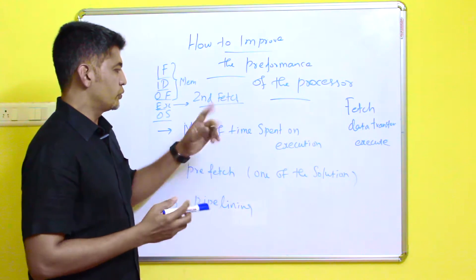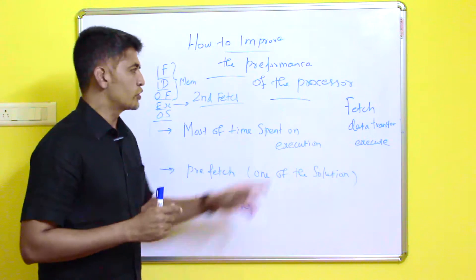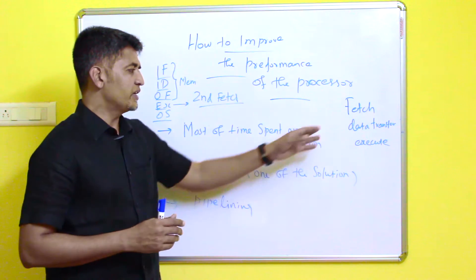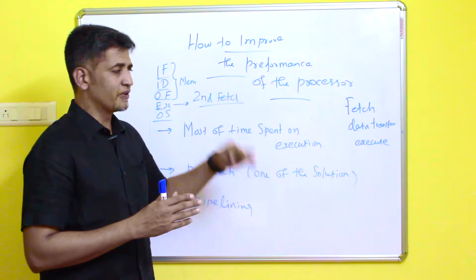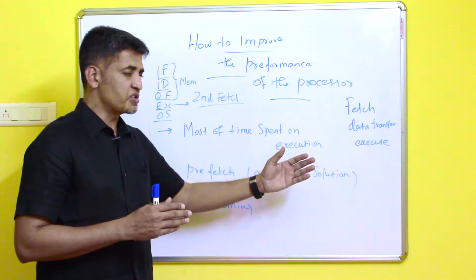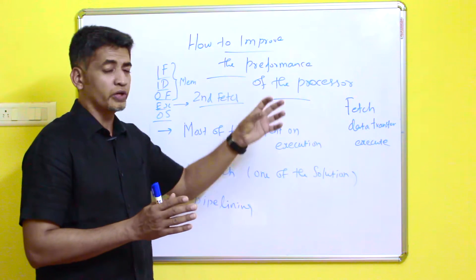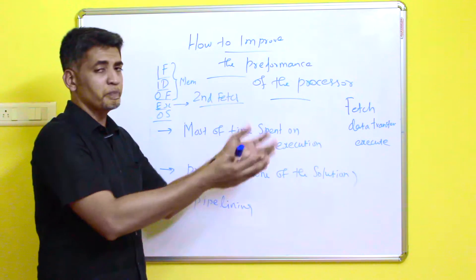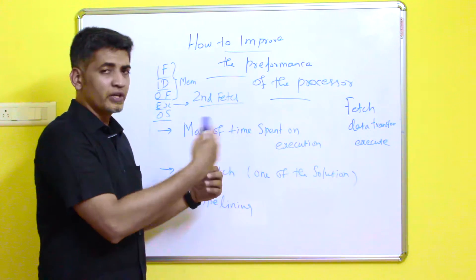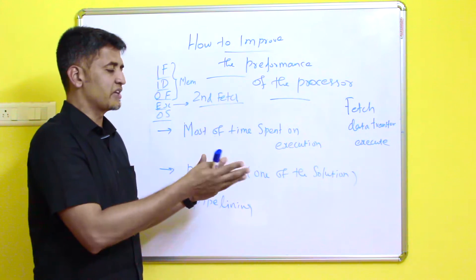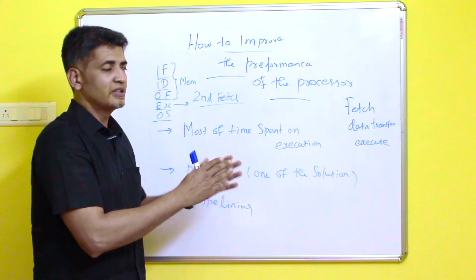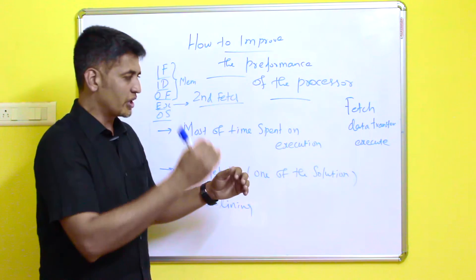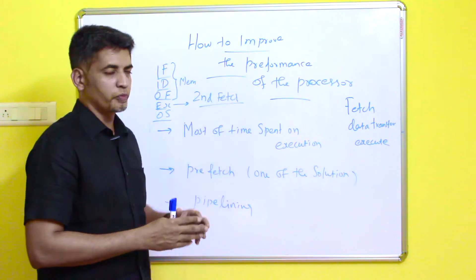We have discussed two simple solutions to improve processor performance. The first is prefetch: after fetching the first instruction, once it moves to the execution stage, you can access the second instruction and prefetch it. By storing it in the register beforehand, you avoid the data transfer time, thereby improving performance.